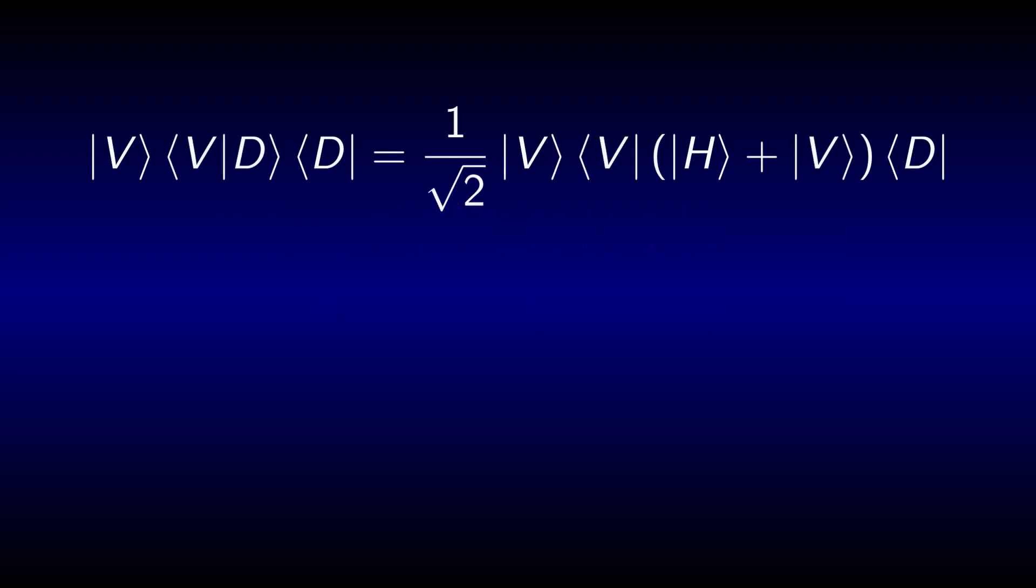The operator describing the total effect of the diagonal and vertical polarization filter on light of any polarization is given by the product of the two operators describing the individual filters. As you can see on the screen, the calculation does not involve a huge number of steps, but it leaves room for some improvement.